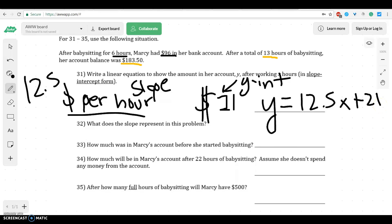Meaning our line equation would be y equals 12.50x plus 21. Well, what's the slope in this problem? It's the $12.50 and it's how much she makes per hour. And then how much did she start with? She started babysitting with $21 in her bank account.